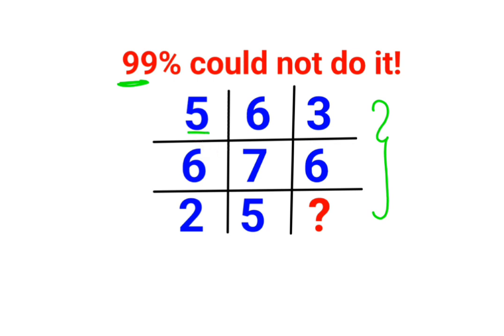So we have 5, then 6, then 2, then we have 6, 7, 5 and 3, 6 and then we have to find this out.